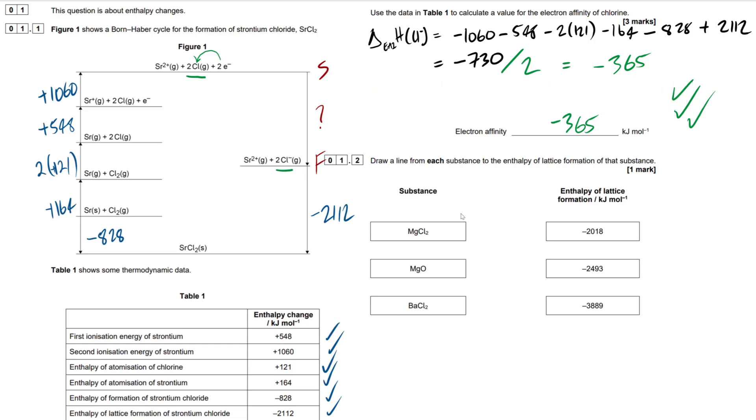So, I'm going through this one quite quickly, but hopefully it's making sense to you guys. It's more of just a revision video for the advanced students that already understand the topic quite well. So, 1.2 then. Draw a line from each substance to the enthalpy of lattice formation of that substance. So, there's some brief theory here that we need to keep in mind. What determines the size of the enthalpy of lattice formation and, alternatively, enthalpy of lattice dissociation?